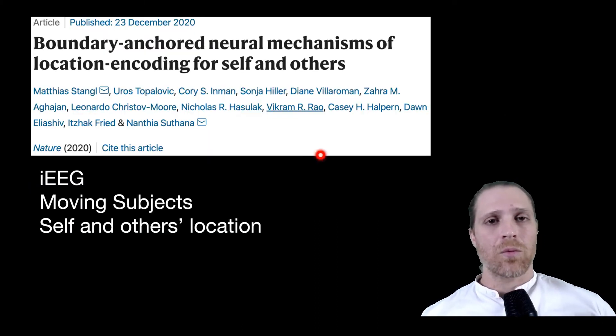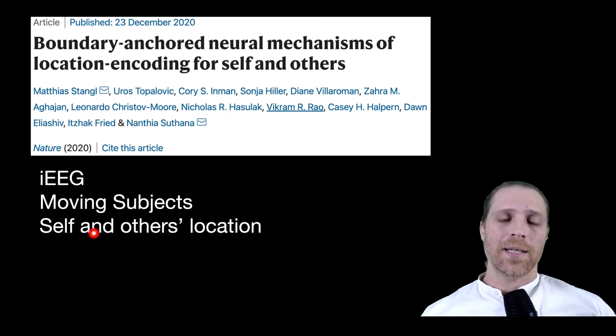In a recent study that was published in December in the journal Nature by the groups of Yitzhak Fried and Nanthia Suthana, the researchers were able to show that using intracranial EEG in moving subjects, that the subjects are able to both indicate their own location near a border as well as the location of others near a border.